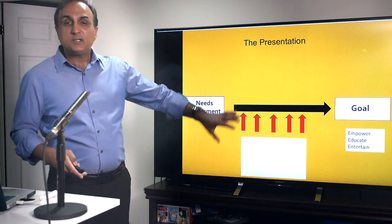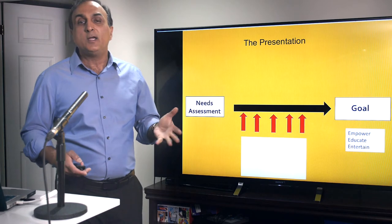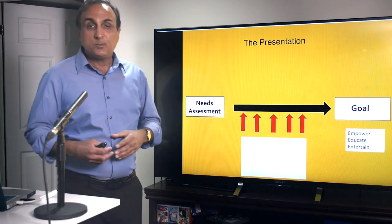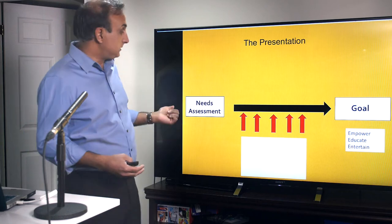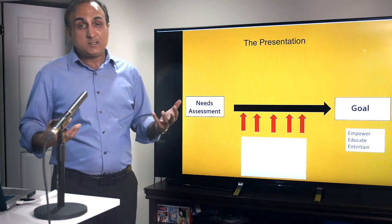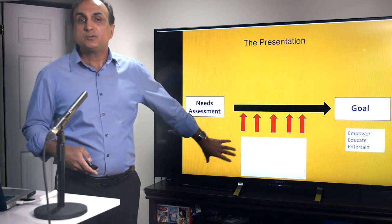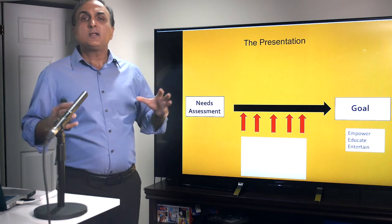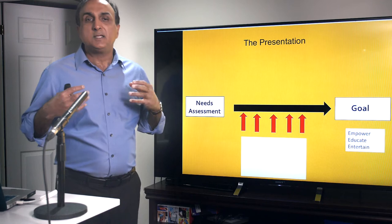But I'm going to talk about the W5. So who, what, where, why. Why is really about the goal. What is your goal? Who is your audience, your needs assessment. Where is important. Where are you going to be speaking? And then this part is really the how to deliver the message in a way that it makes an impact.